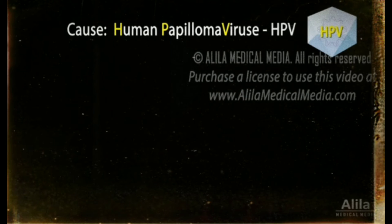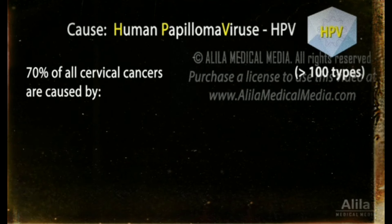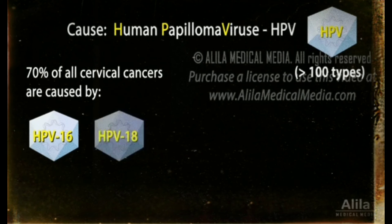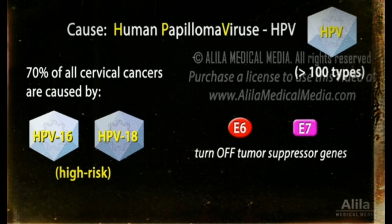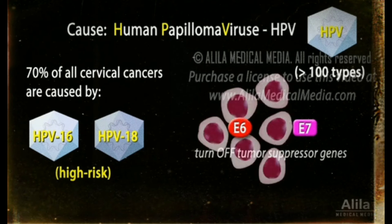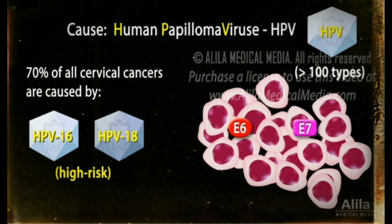Virtually all cervical cancer is caused by human papillomavirus or HPV. There are over 100 types of HPV, some of which pose a higher risk than others. About 70% of all cervical cancers are caused by just two types, HPV-16 and HPV-18. Two proteins produced by HPV known as E6 and E7 interfere with cell functions that normally prevent excessive cell division. This causes the cells to grow in an uncontrolled manner.